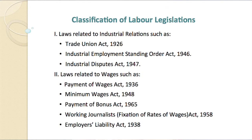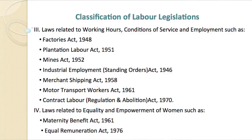Let us now discuss about the classification of labour legislation. On the basis of specific objectives, labour legislation in India can be classified into some categories. Laws related to industrial relations include the Trade Union Act 1926, Industrial Employment Standing Orders Act 1946, and Industrial Dispute Act 1947. Laws related to wages include the Payment of Wages Act 1936, Minimum Wages Act 1948, Payment of Bonus Act 1965, and Working Journalist Fixation of Rates of Wages Act 1958. Laws related to working hours, conditions of service and employment include the Factories Act 1948, Plantation Labour Act 1951, Mines Act 1952, and Industrial Employment Standing Orders Act 1946.